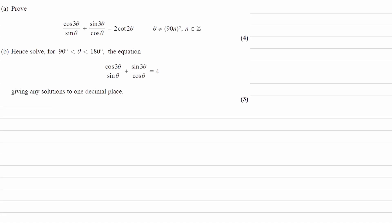Prove that cos 3 theta over sin theta plus sin 3 theta over cos theta is equal to 2 cot 2 theta. Let's start with the left-hand side.